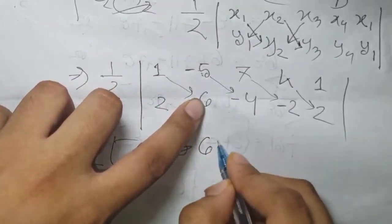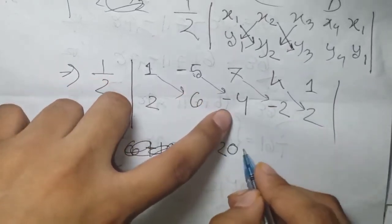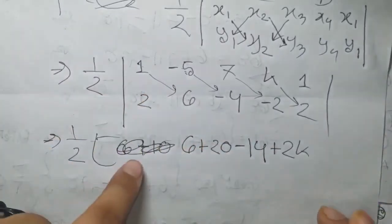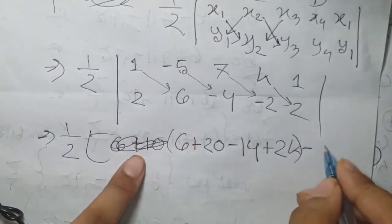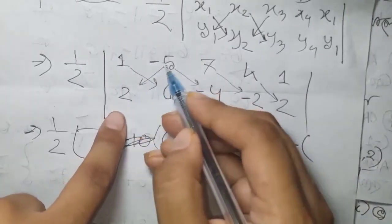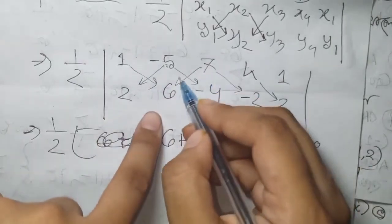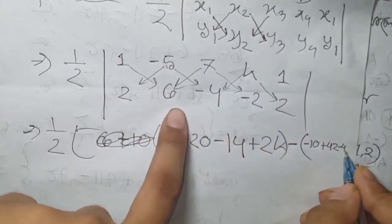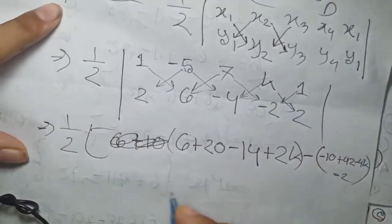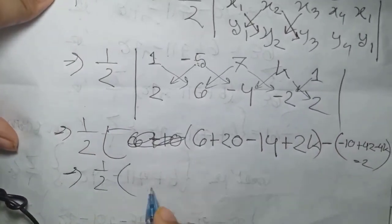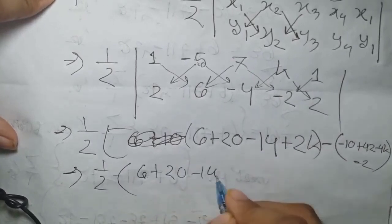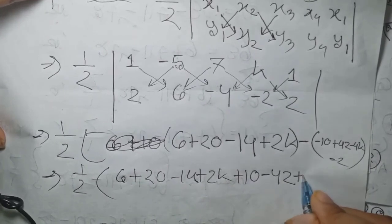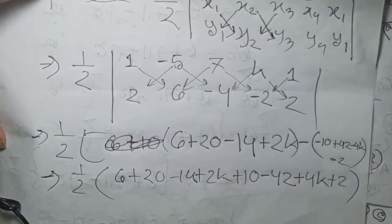Minus 1 and minus 4, minus 2. Do I have 10 degrees? Videos using minus one. I say minus one here, minus one, and minus the bottom 1, minus 10. It changes to 16, which equals 20. That means minus two. Half into 6 plus 20 minus 14 plus 2k. Minus equals minus 10 plus minus 42, minus 4k minus 2.